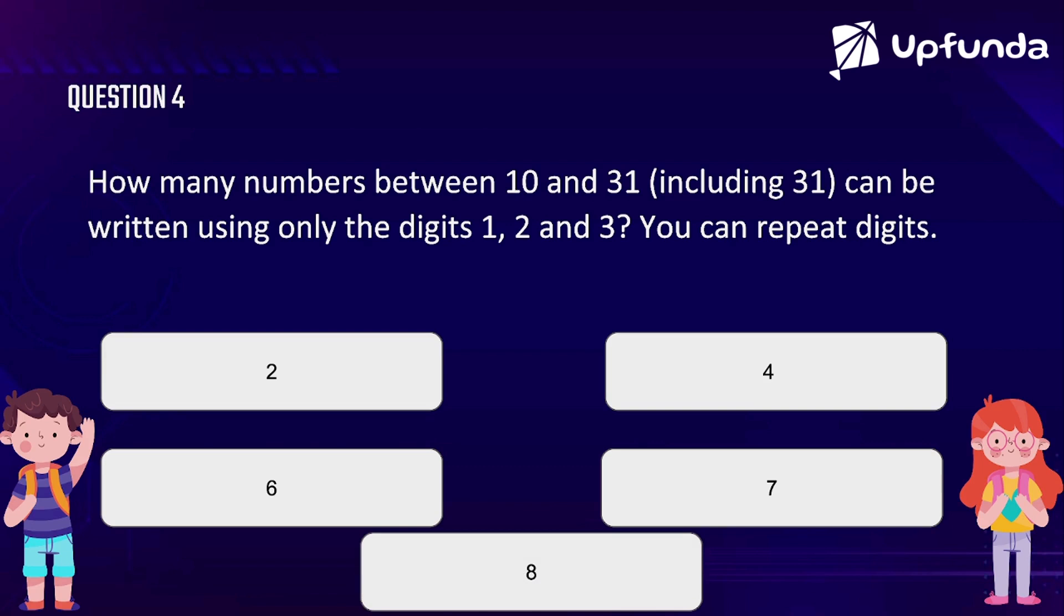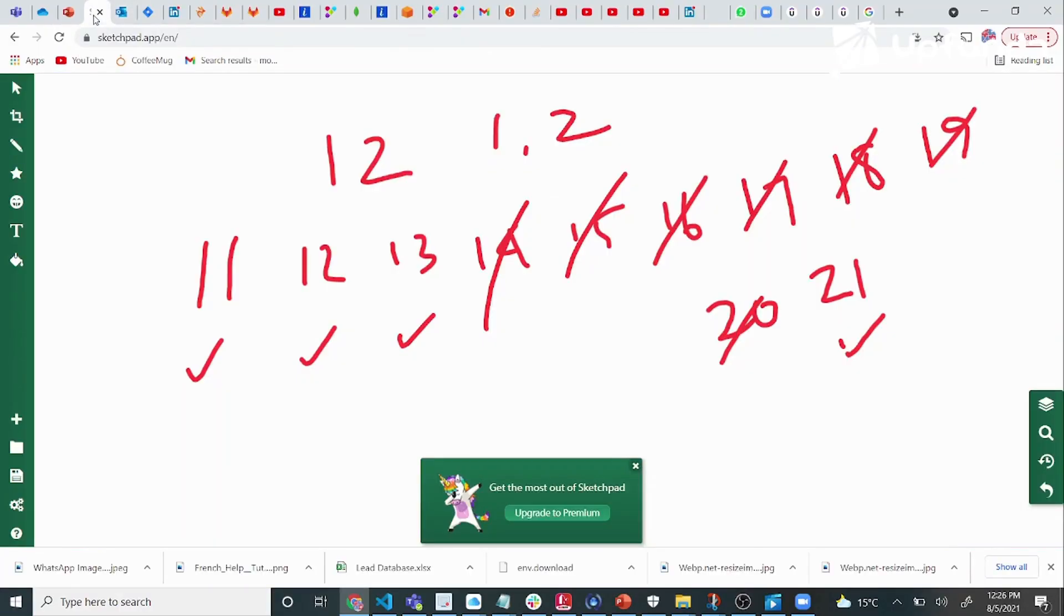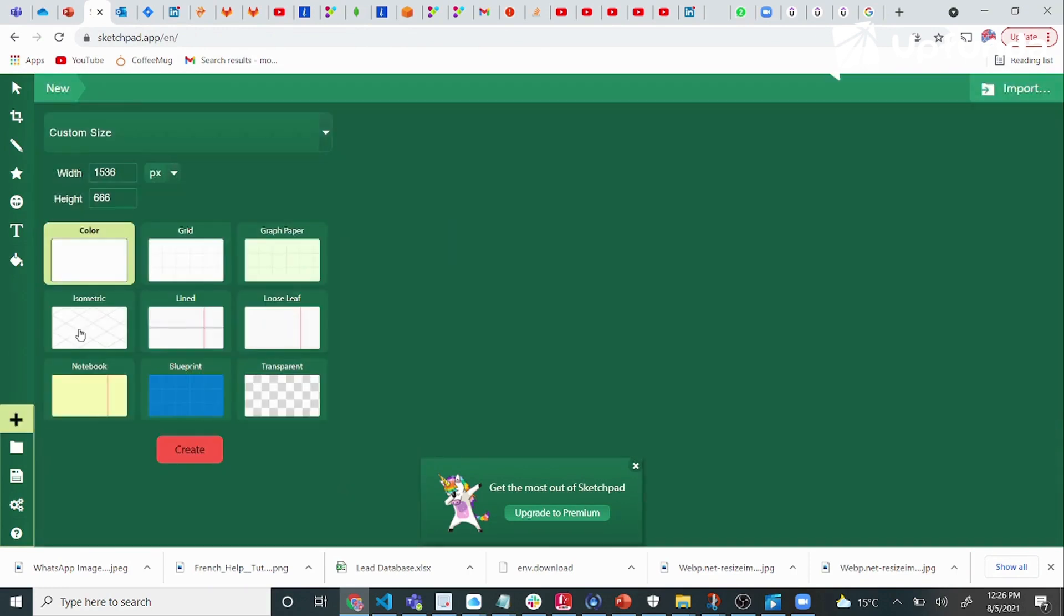Between 10 and 31 means 10 is not included, from 11 till 31. And it can be written using only the digits 1, 2, and 3. You can repeat digits.